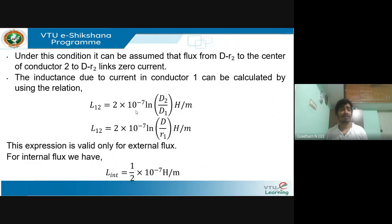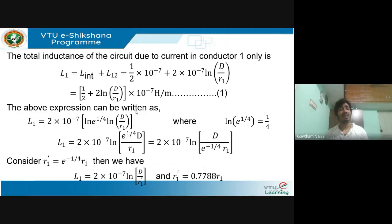The inductance between conductor 1 and 2 for external flux is: L12 = 2 × 10⁻⁷ × ln(d2/d1) H/m. For internal flux, it is (1/2) × 10⁻⁷ H/m, as derived previously. The total inductance is obtained by adding both internal and external flux linkage contributions. The key difference here is that you have two conductors, and attention must be paid to the distances d minus r2, d, and d plus r2.